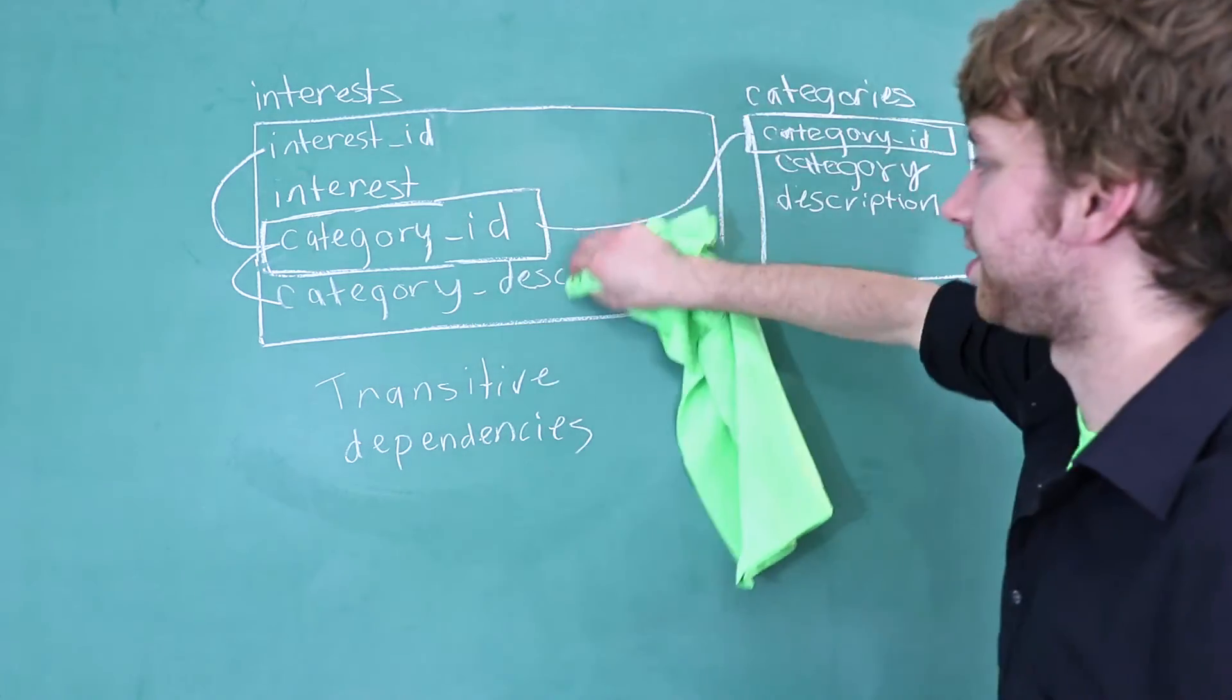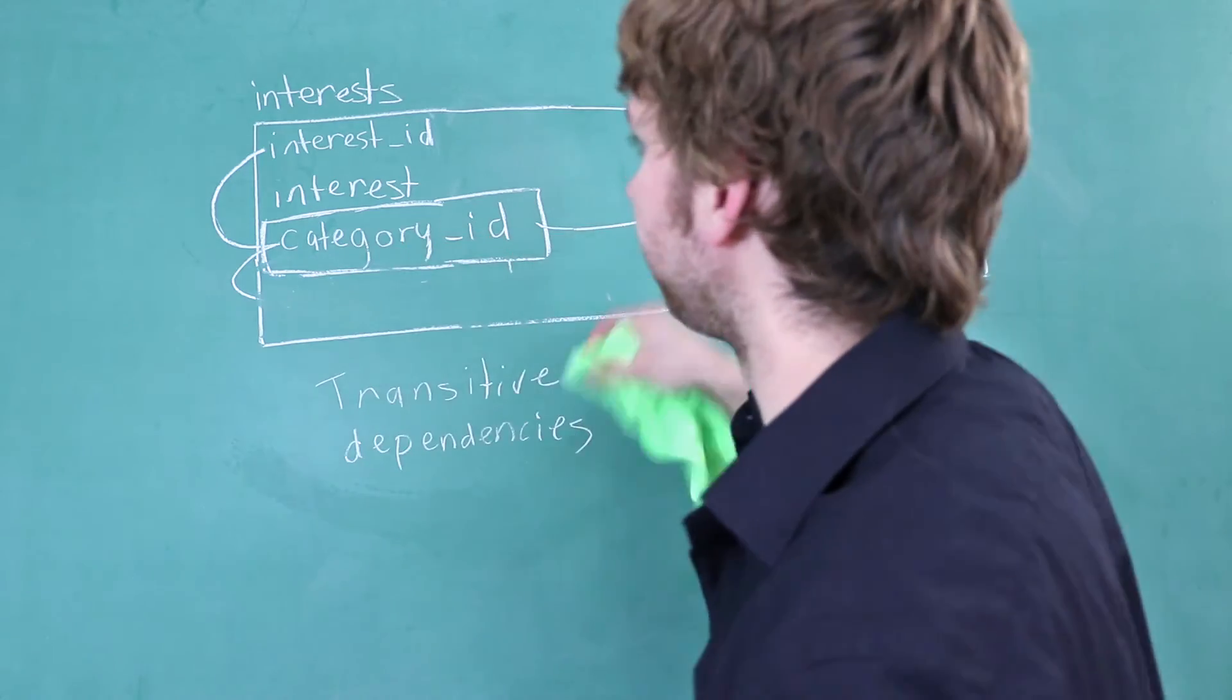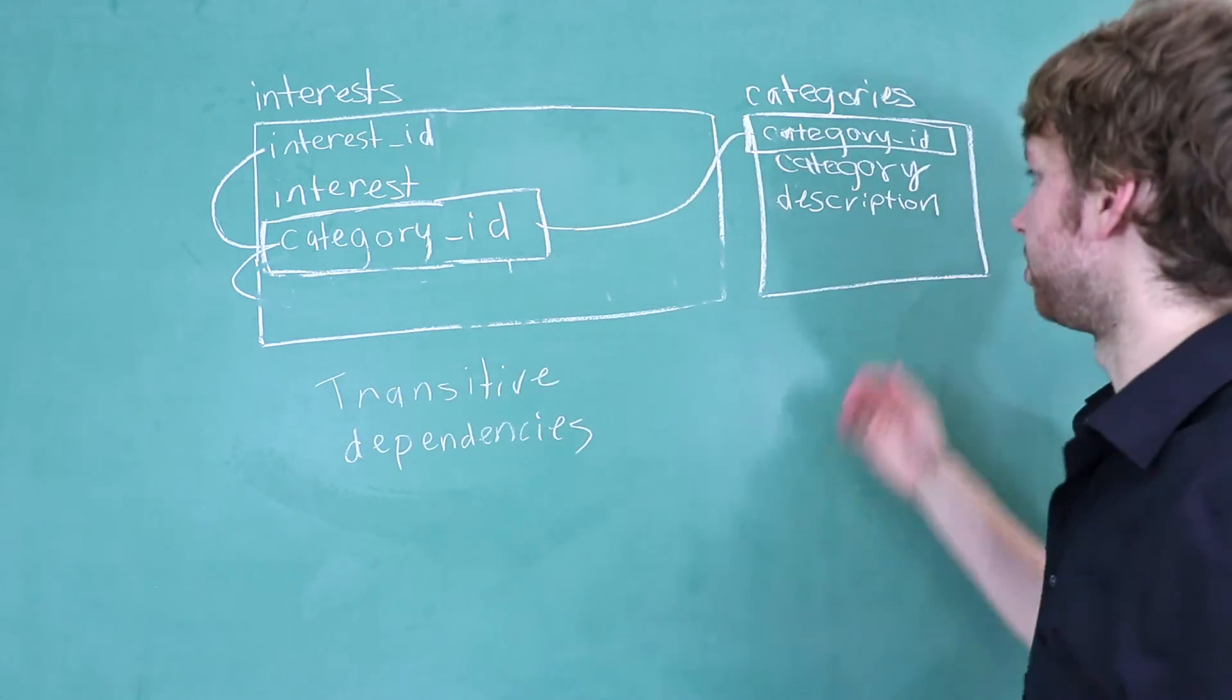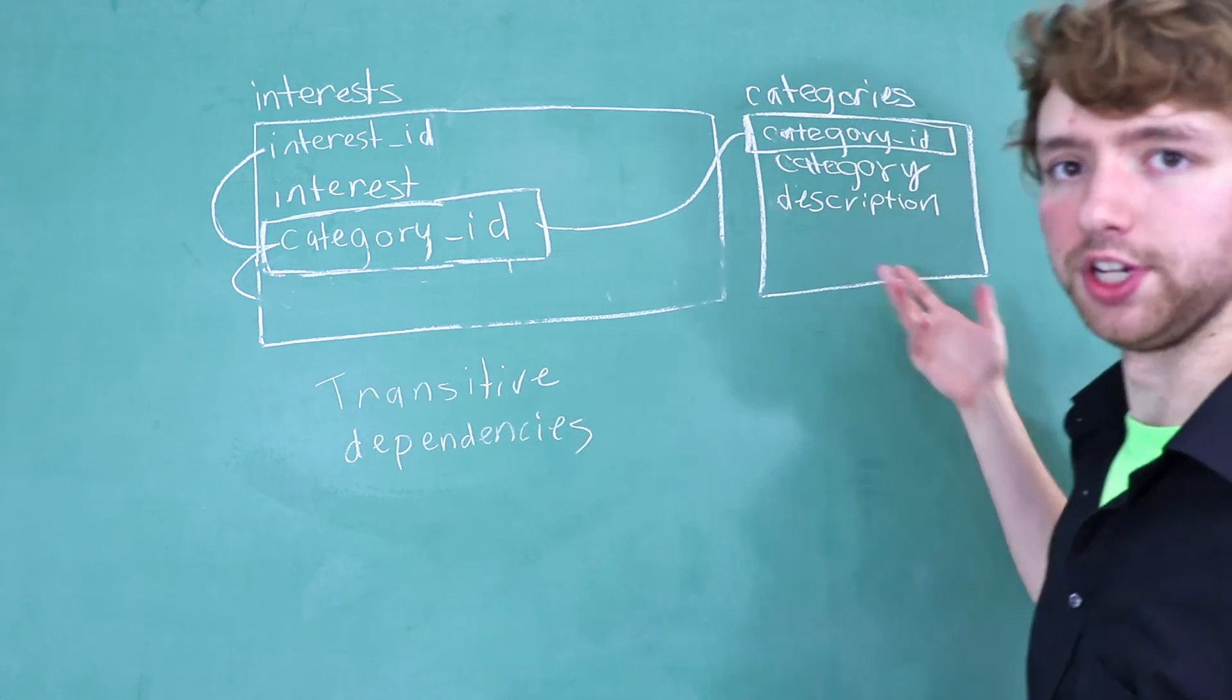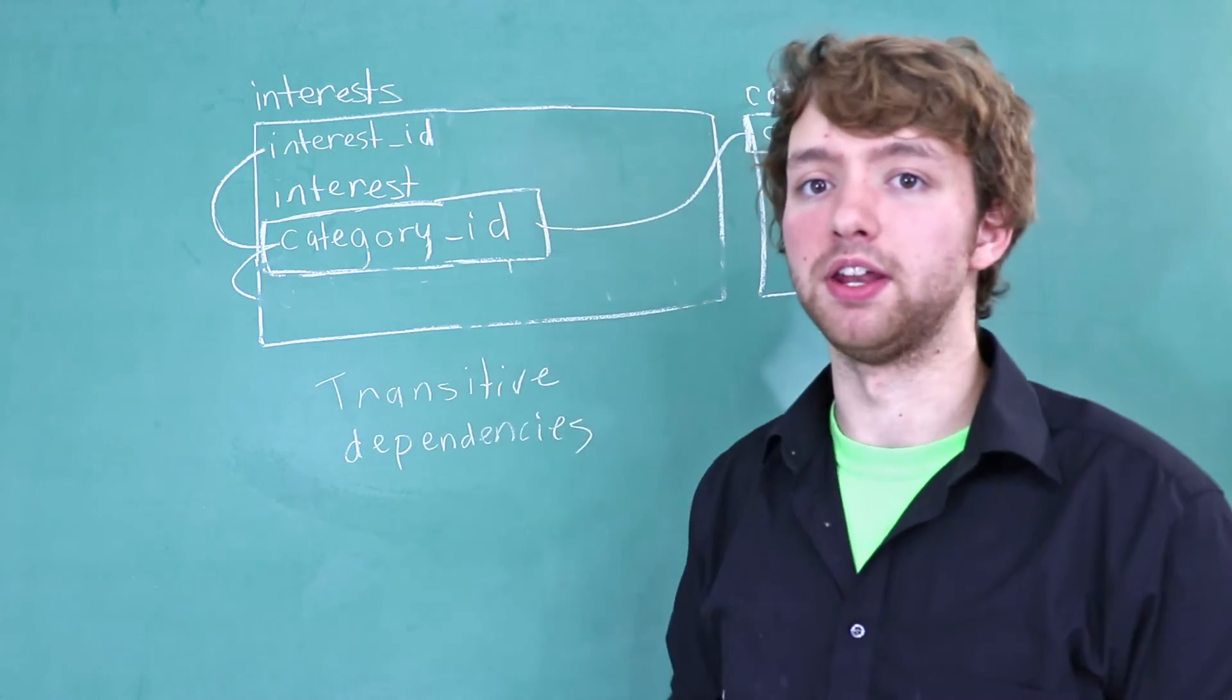And this makes sense - we don't want to have this in here because we're going to have the category description in here for every single interest. That doesn't make sense. We really only need the category description one time - once for each category. So that is how you fix third normal form and get rid of transitive dependencies.